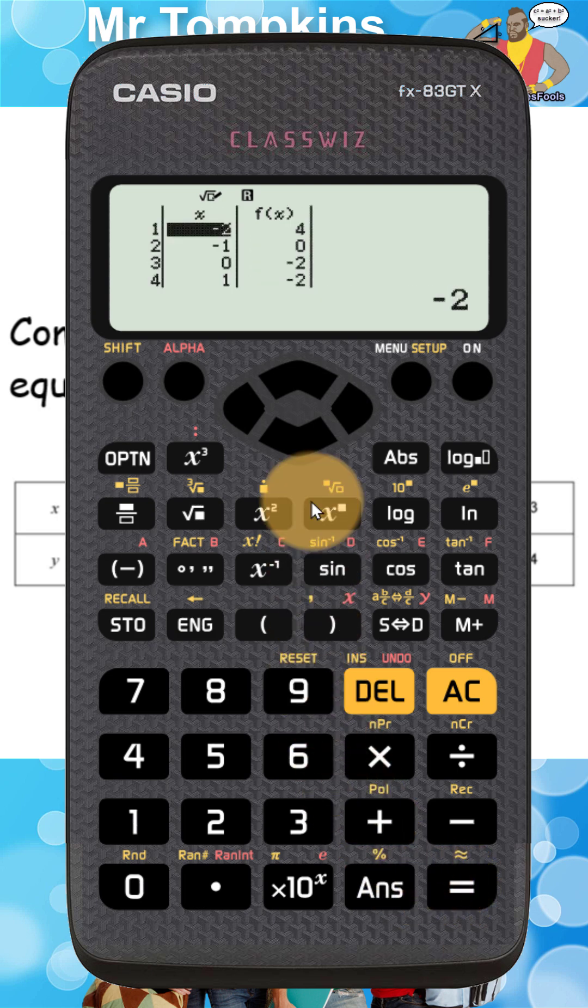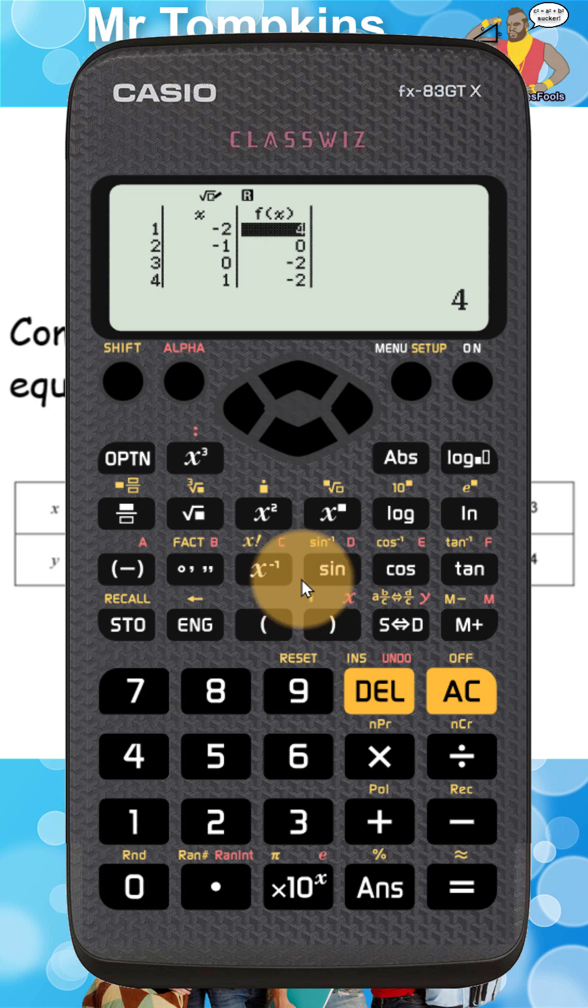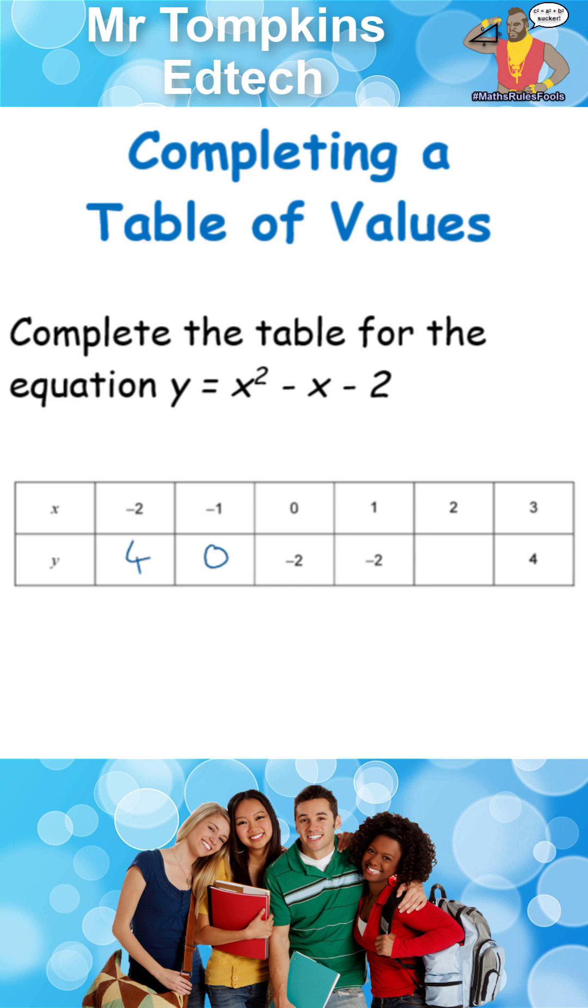You can see it then draws the table for me. It's got it the other way up than the table on my page but that doesn't matter. So next to minus 2 I've got 4 so I'm going to write that into the table. The next value I've got minus 1 goes with 0 so I'm going to write 0 in the table. The next value is minus 2. That's already on my table so I'm quite happy it seems to be matching up.